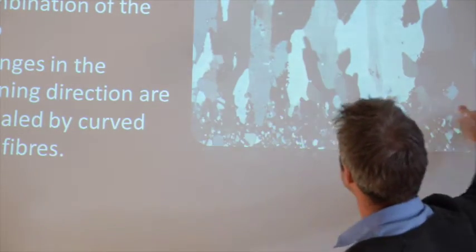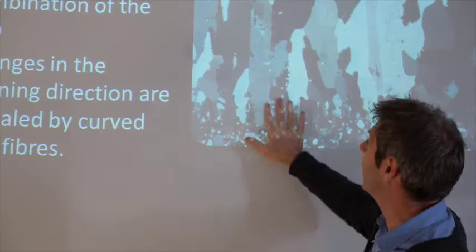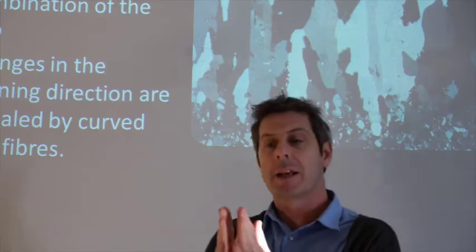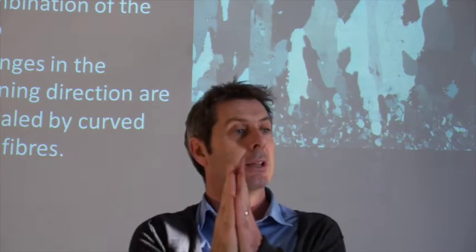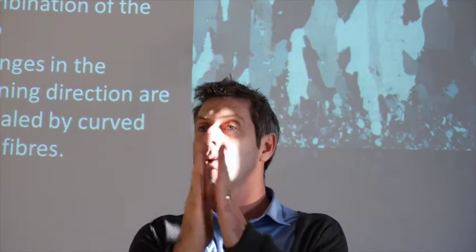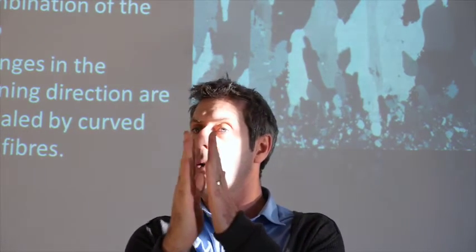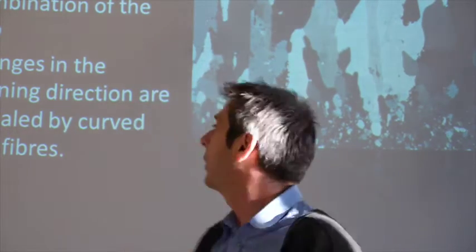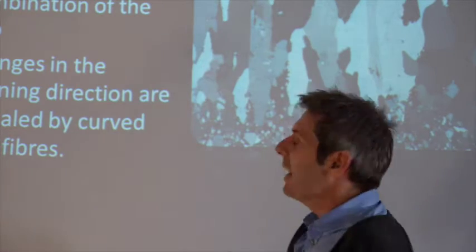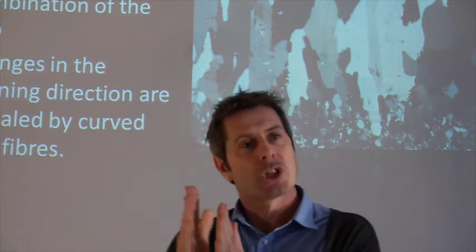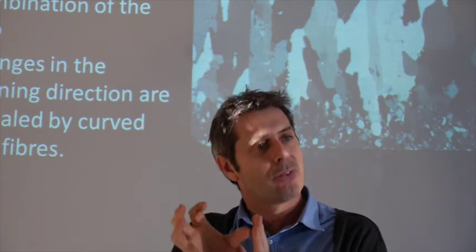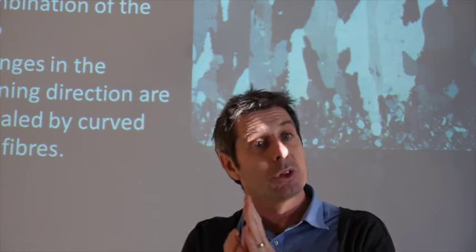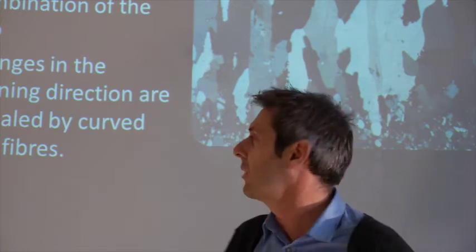We can see the wall rock — the edge of the fracture — and here we've got fibres growing into the space at 90 degrees to the wall rock. That's essentially a dilational structure; it's just getting pulled open. But if there's a little bit of shear on it, the growth fibres would change — they'd be at a different angle.